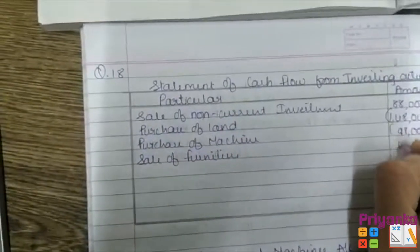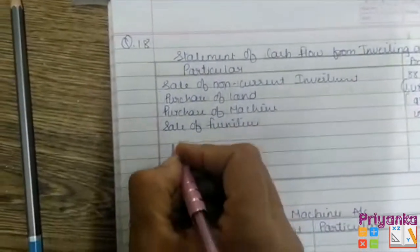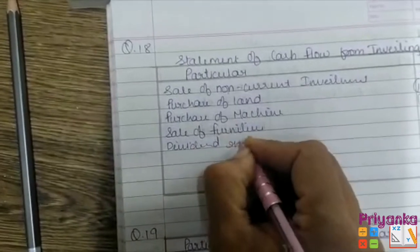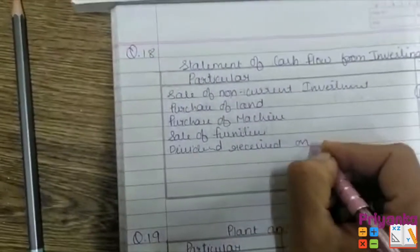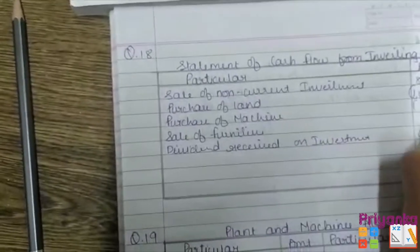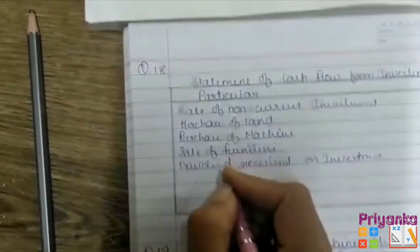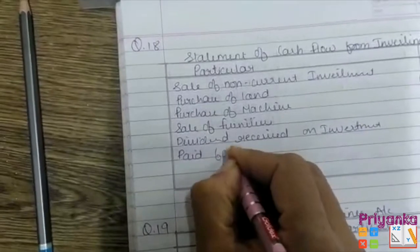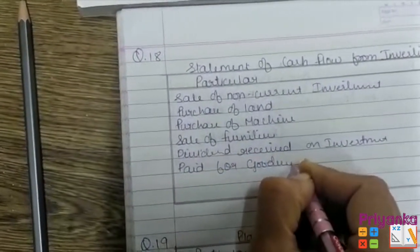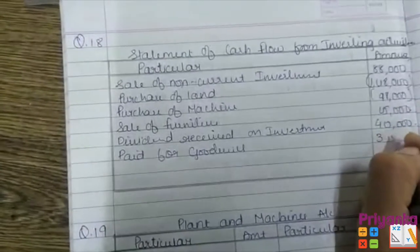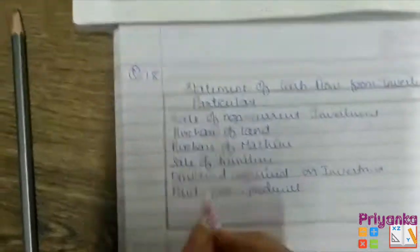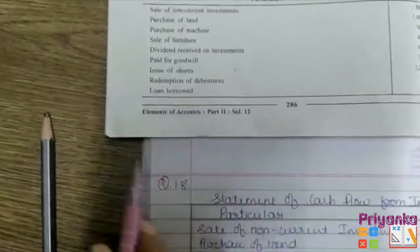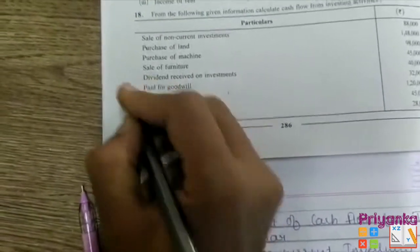Sale of furniture shows as an inflow, as we are selling an asset, it shows a cash inflow. Next is dividend received — again it is an inflow, saved on investment, that is 40,000. Next, paid for goodwill — this is an outflow, so we will keep it in brackets. Next, issue of share, redemption of debenture, and loan borrowed — these three things are counted in the financial activity, so do not record them in investing activity.